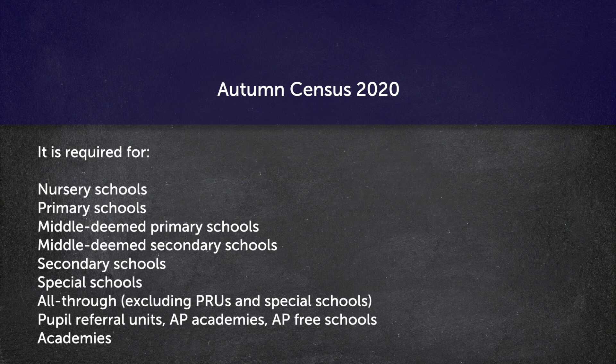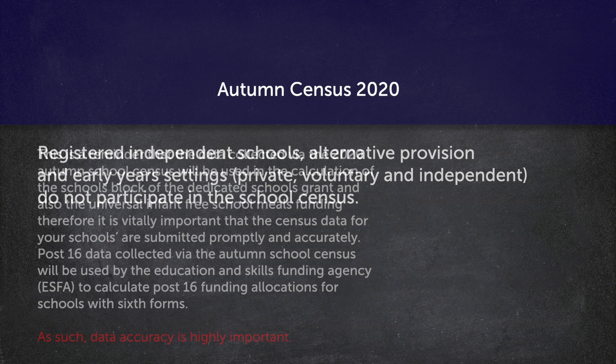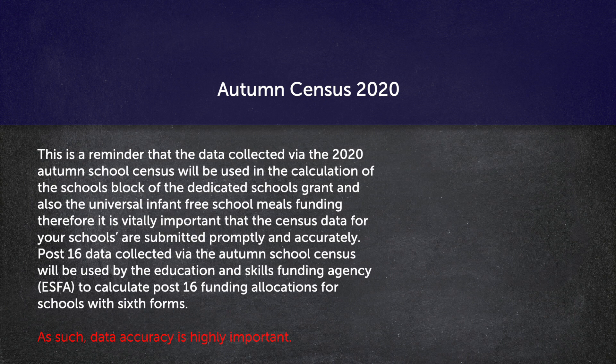The census is required for the following settings: registered independent schools and alternative provisions. Early year settings — private, voluntary and independent — do not participate in the school census. The data collected via the autumn 2020 school census will be used in the calculation of the school's block of dedicated schools grant and also the universal infant free school meals funding. Therefore, it is vitally important that the census data for your schools are submitted promptly and accurately.